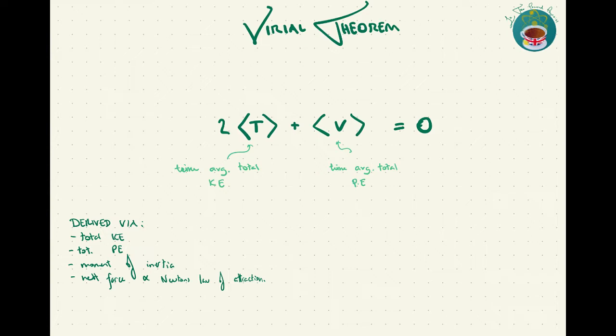Put simply, Virial Theorem says that if you know how much mass is in the system you're studying, you can work out the forces that bind them alongside the total kinetic and potential energies of that system. This then allows you to work out a load of other information, such as the temperature of that system.